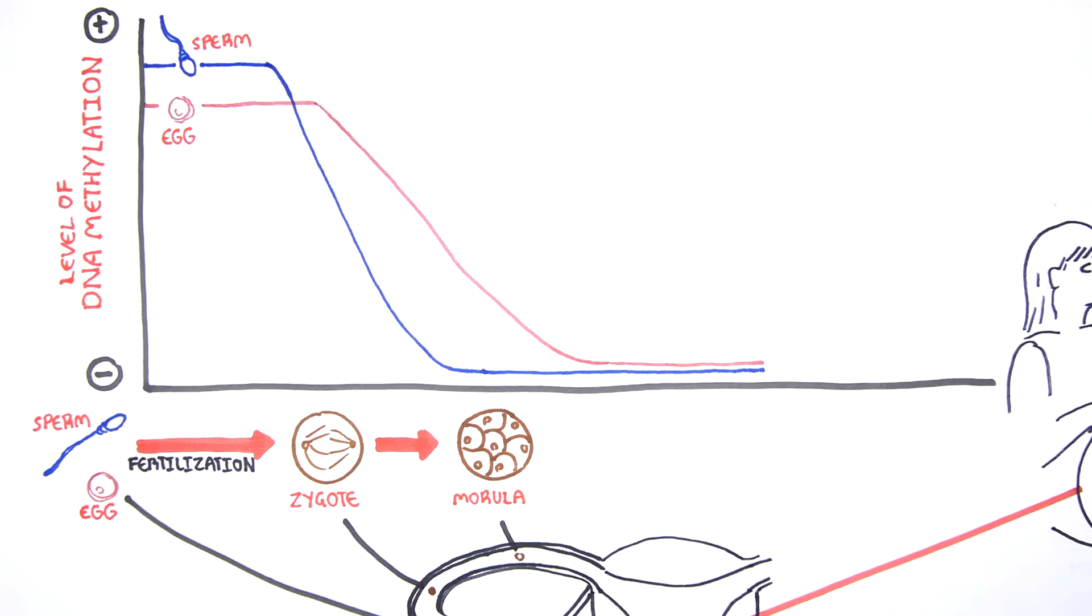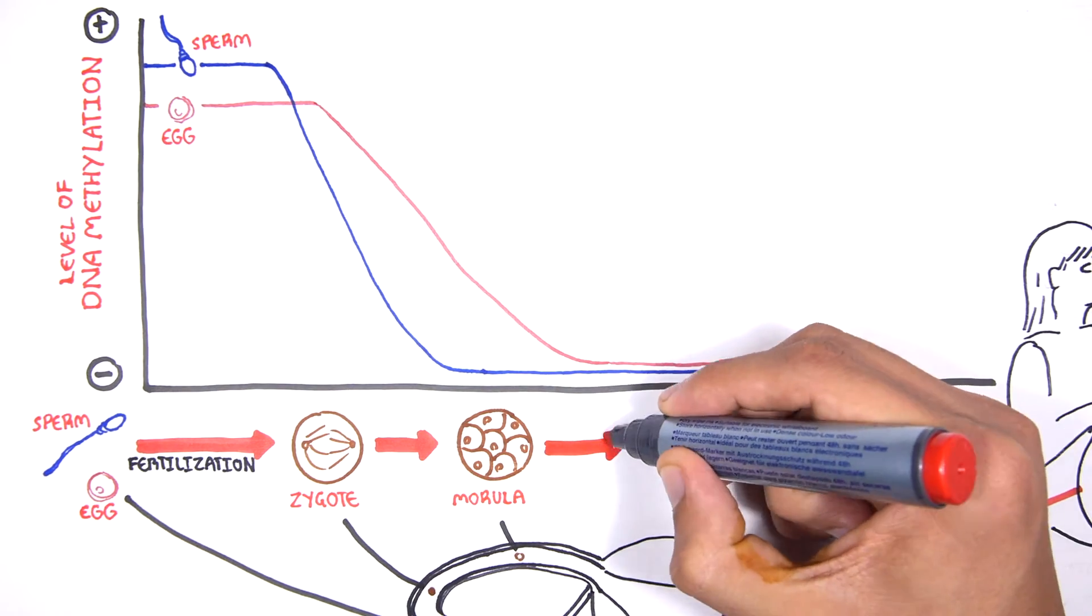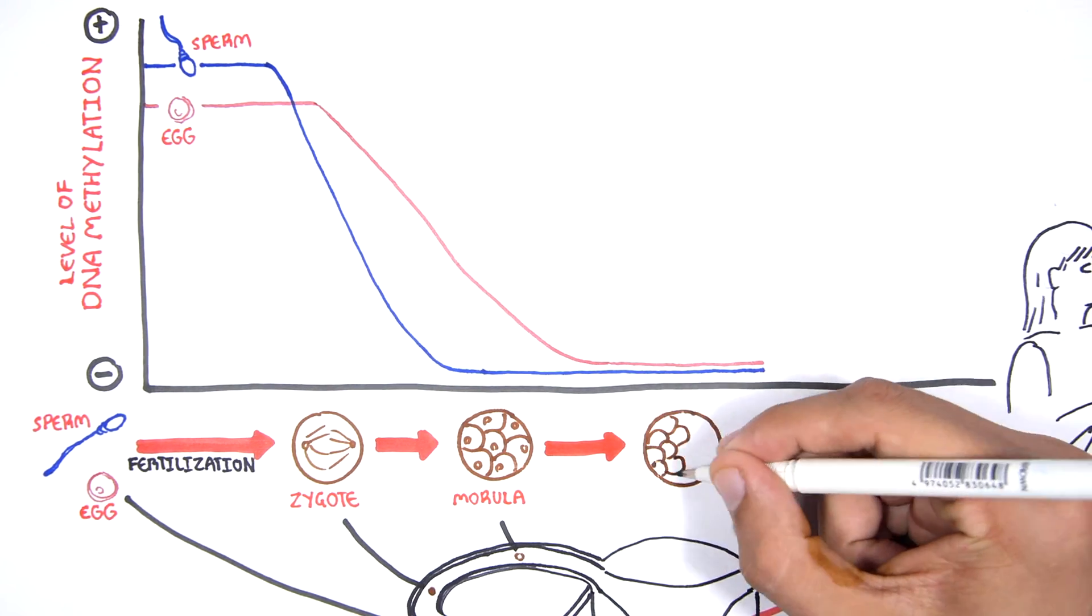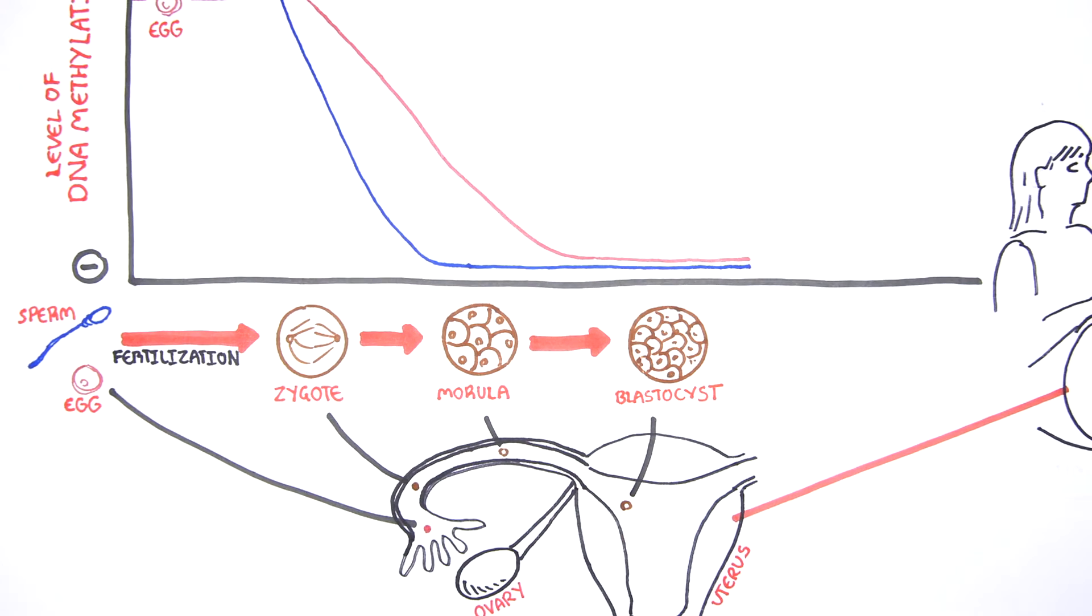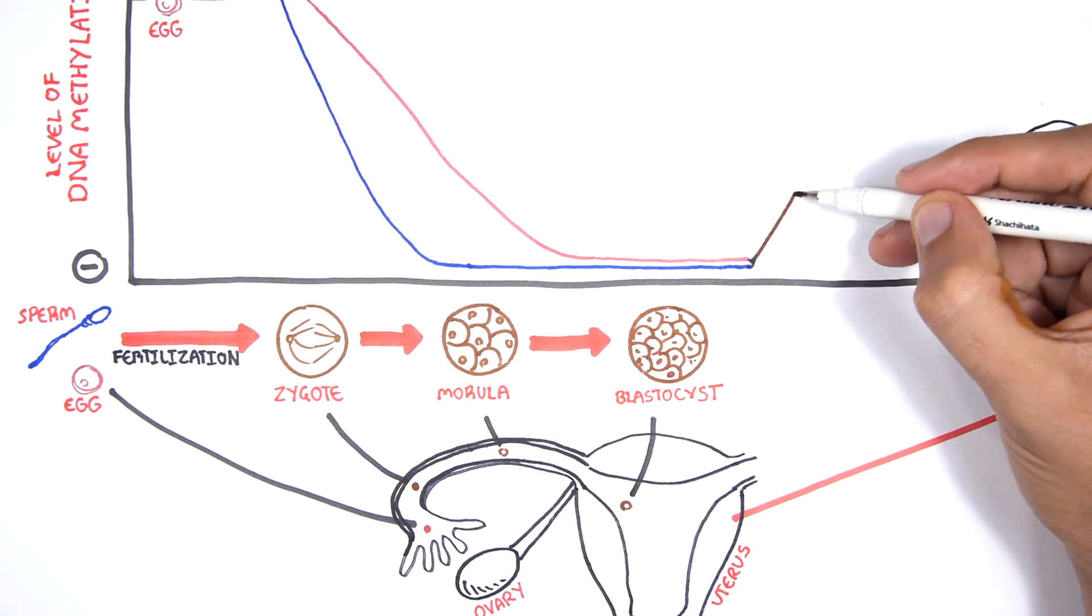By the morula stage, the methylation pattern of the embryo is essentially erased. At the blastocyst stage, de novo methylation is initiated. De novo methylation is where new methylation patterns are re-established in the growing embryo.